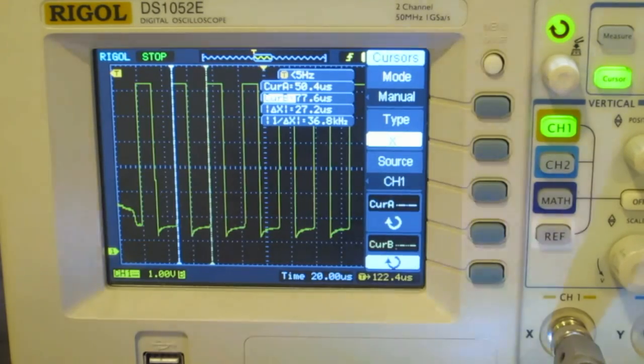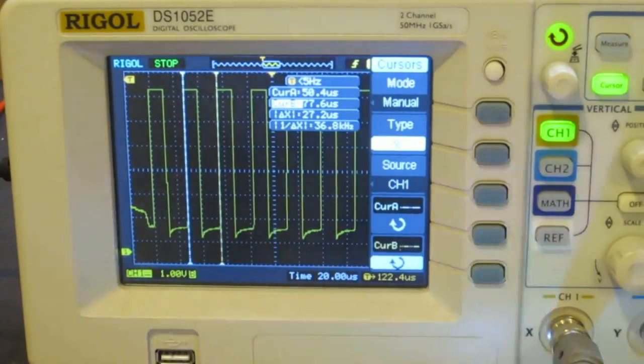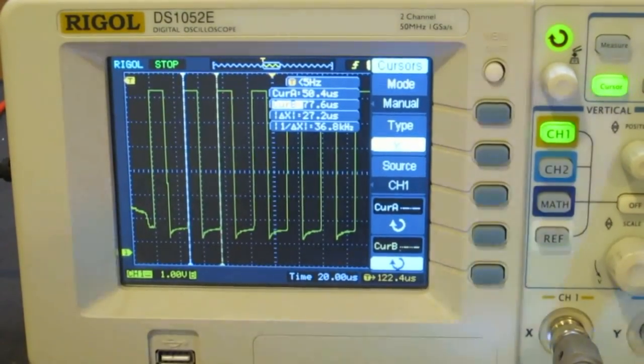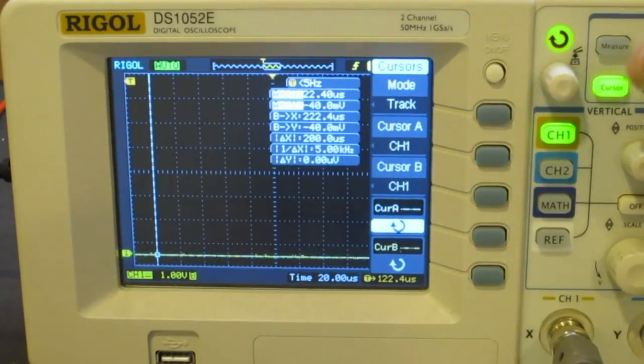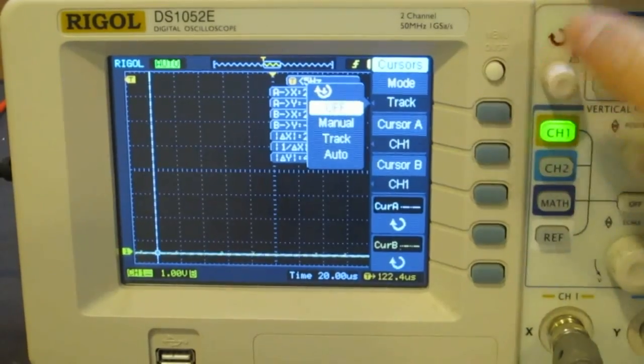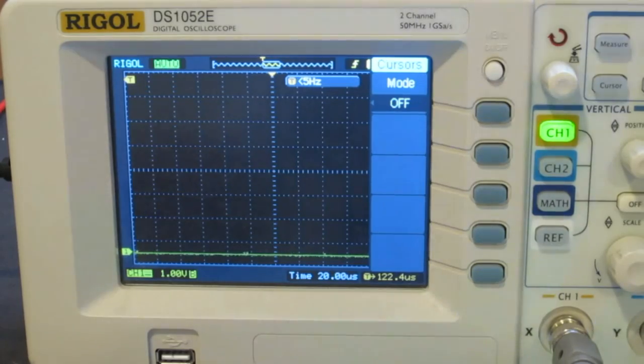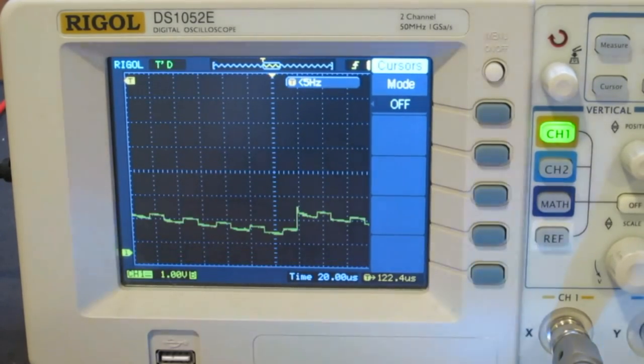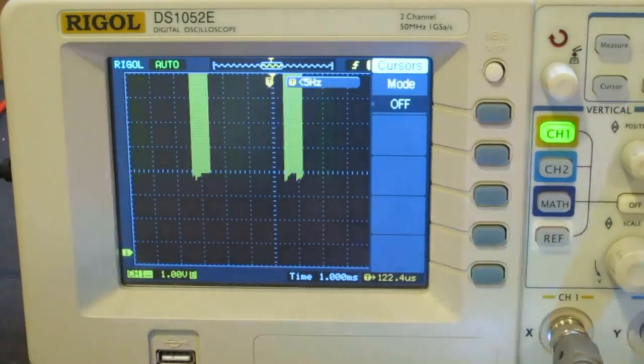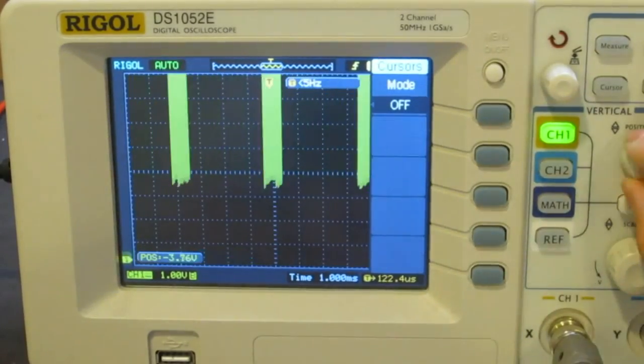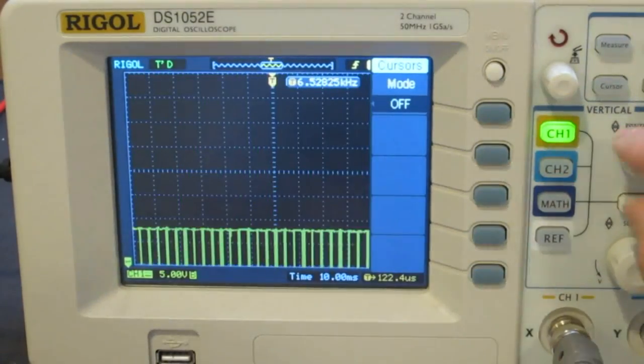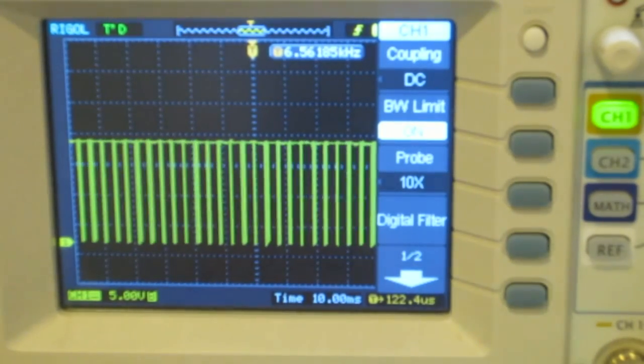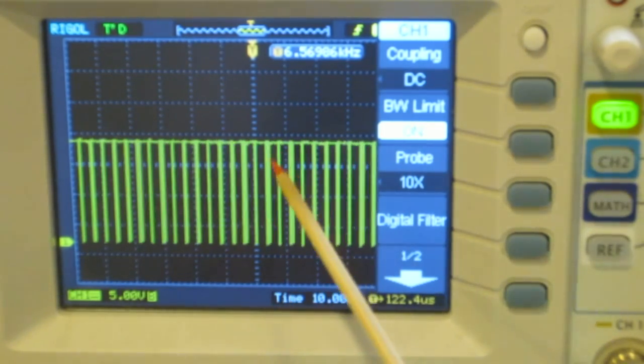So now let me change this back to run. And actually change the sweep to auto. Turn off the cursor. Mode off. So now let's just measure this live to see that again. So for that, I'm going to hook up the ground. And let's increase the time base here. So as you can see here, we have these pulse trains generated. So as you can see here, each burst here is that modulated signal being transmitted.